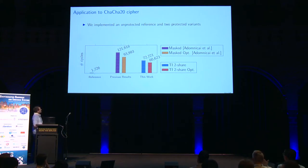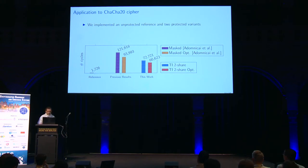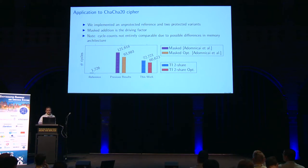We measured the performance for the ChaCha cipher as well. The overhead of the masked implementation is quite large compared to a reference implementation needing below 2,000 cycles. Using the optimized gates, we can shave off a bit more. We see that masking the addition is a key driving factor in protecting the ChaCha cipher. Note that cycle counts aren't quite comparable because we measured on multiple platforms, with results varying due to differences in memory architecture.